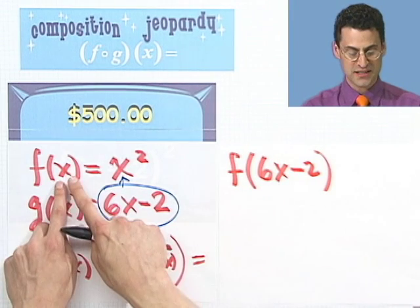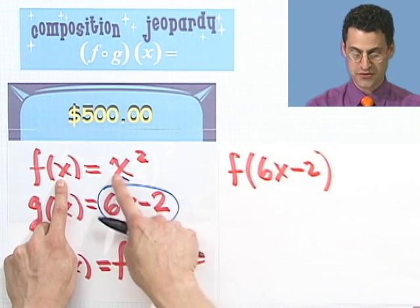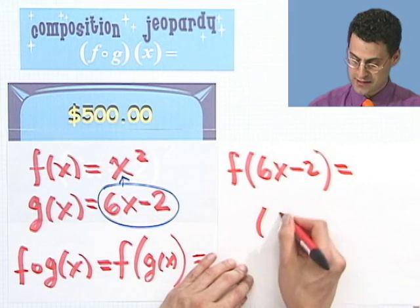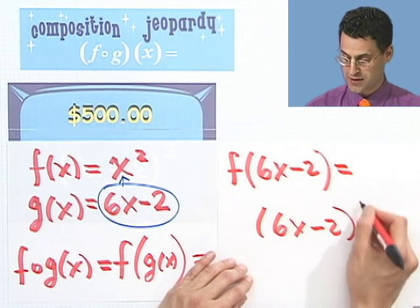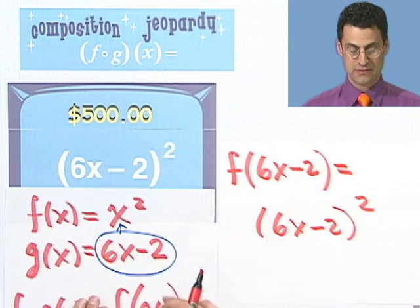And then what do I do? Wherever I see an x in the f, I just replace it by this. And so that would actually equal exactly 6x minus 2 squared. And that's exactly what was posed to us.